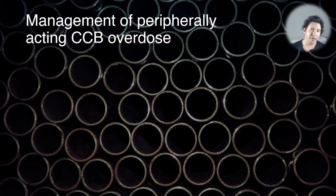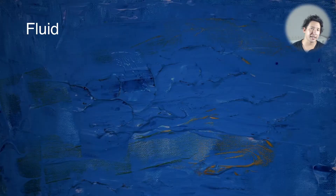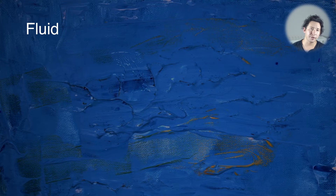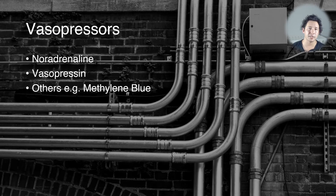When managing a peripherally acting calcium channel blocker overdose like amlodipine, the main effect is hypotension. You treat that with fluid, and once you've given a couple of boluses and that's not enough to restore blood pressure, it's time to start thinking about vasopressors.